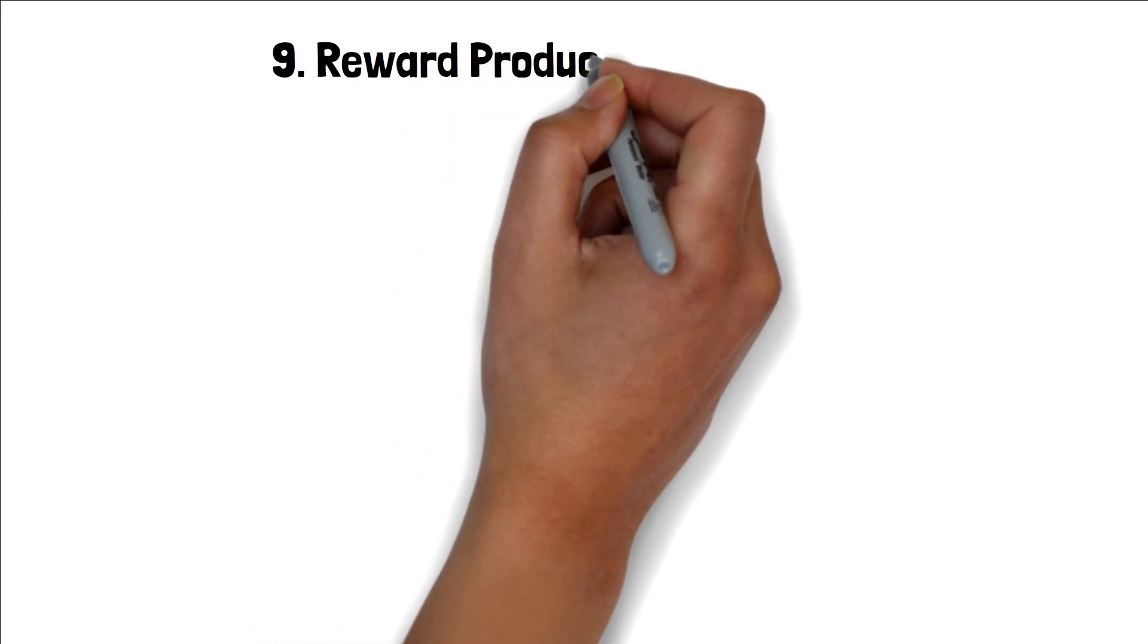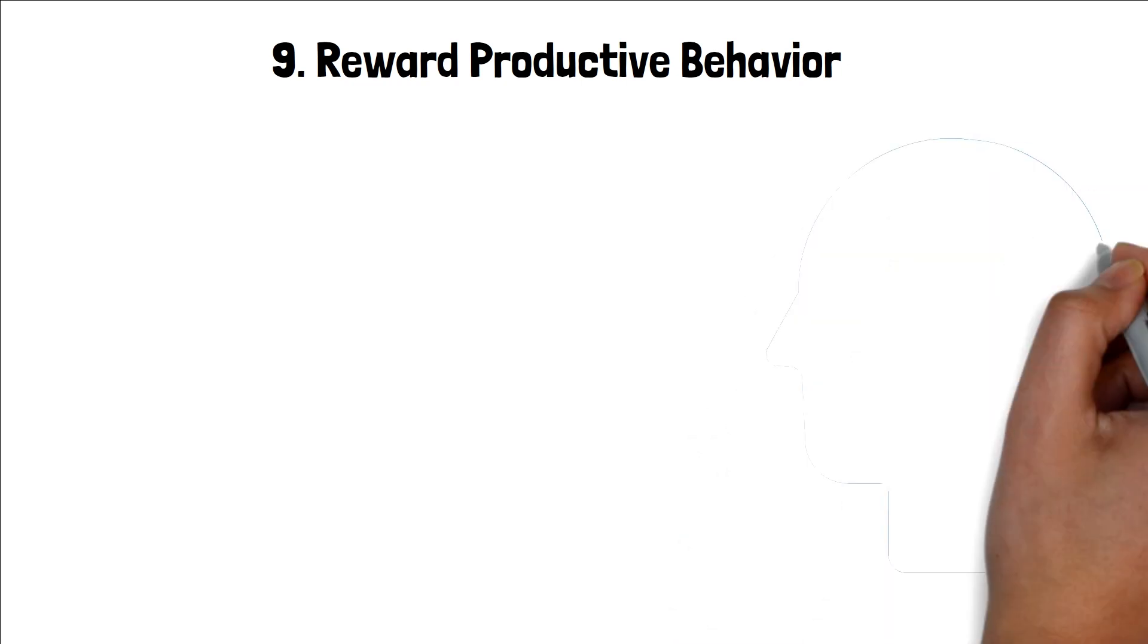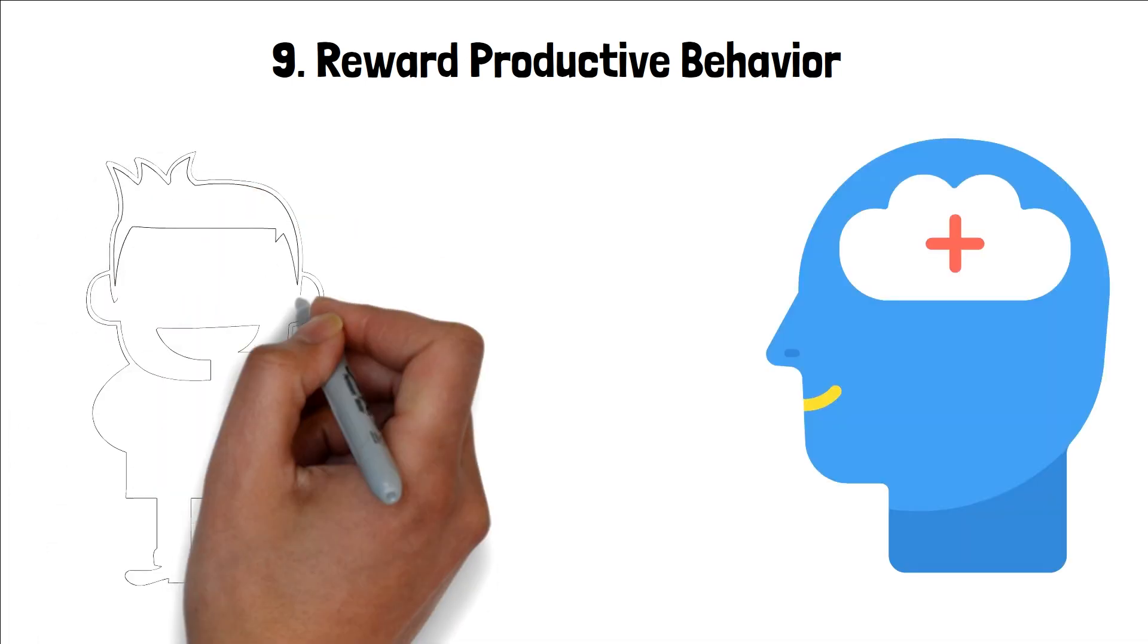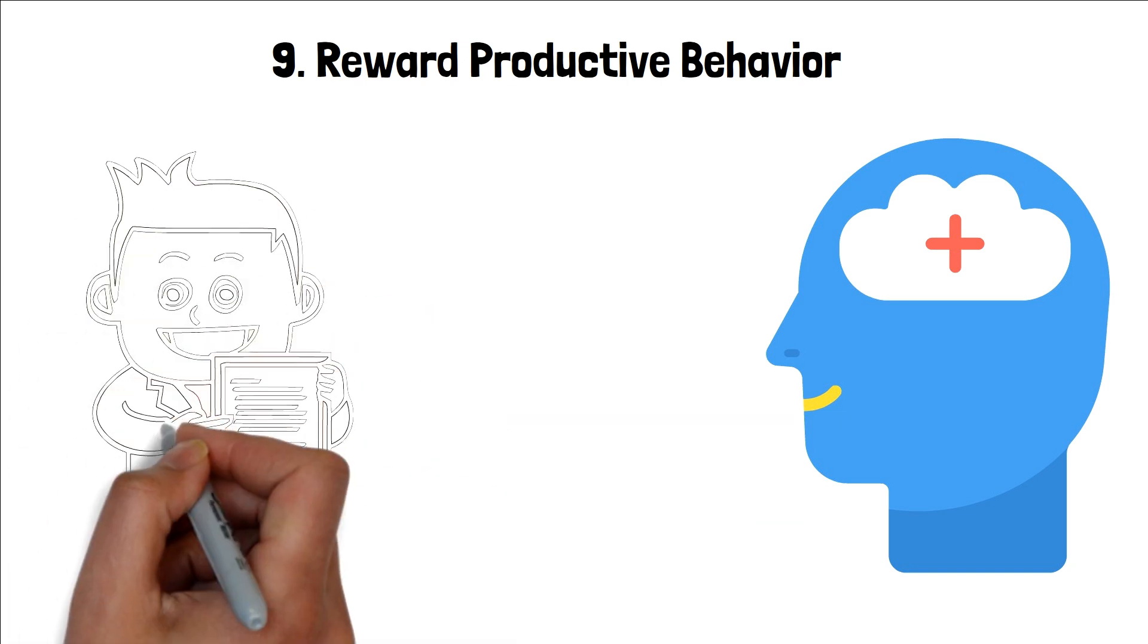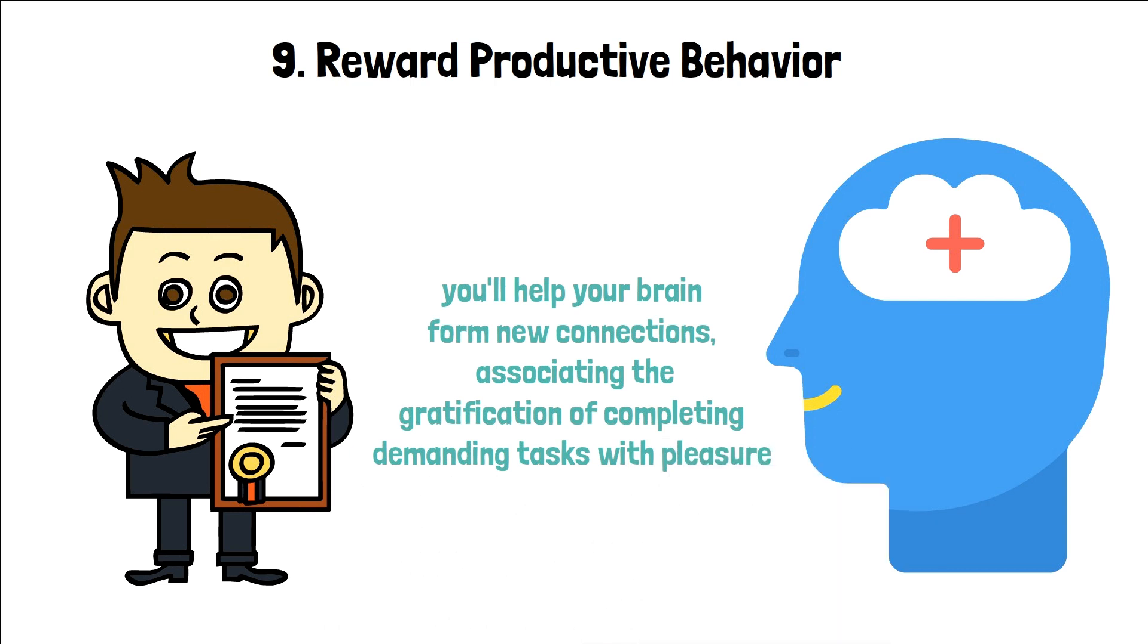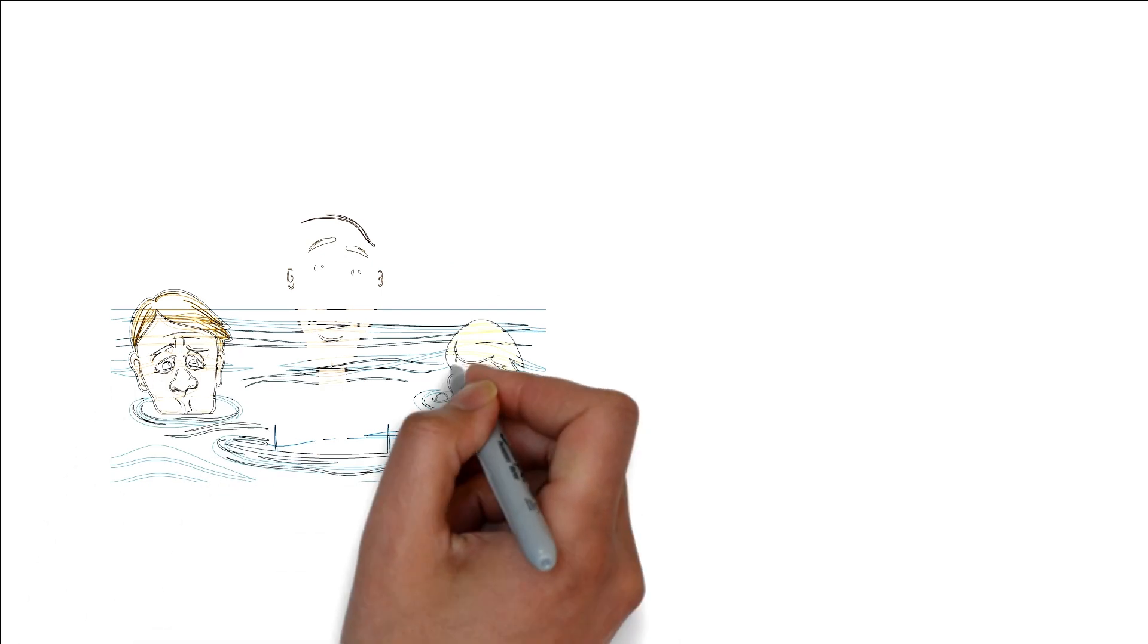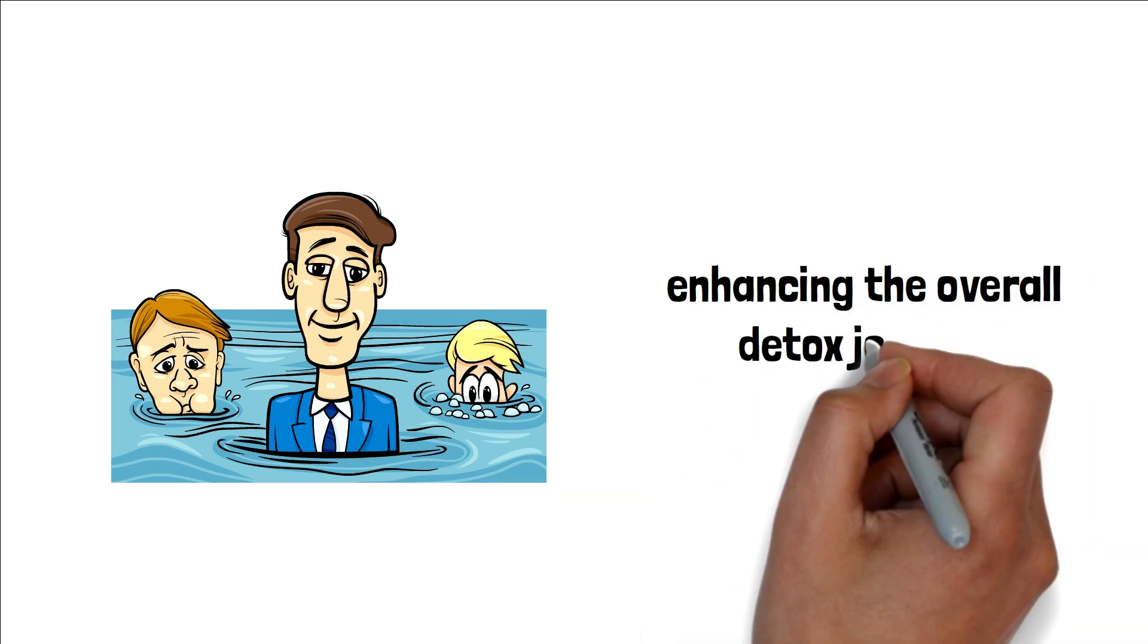9. Reward productive behavior. After your dopamine detox, it's beneficial to reinforce positive behaviors by setting up a reward system tailored to your achievements. For instance, once you complete a challenging task, treat yourself to a favorite activity or a small indulgence. As you consistently apply this approach, you'll help your brain form new connections, associating the gratification of completing demanding tasks with pleasure. This not only bolsters your motivation to tackle challenges, but also strengthens the neural pathways that link effort and reward, enhancing the overall detox journey.